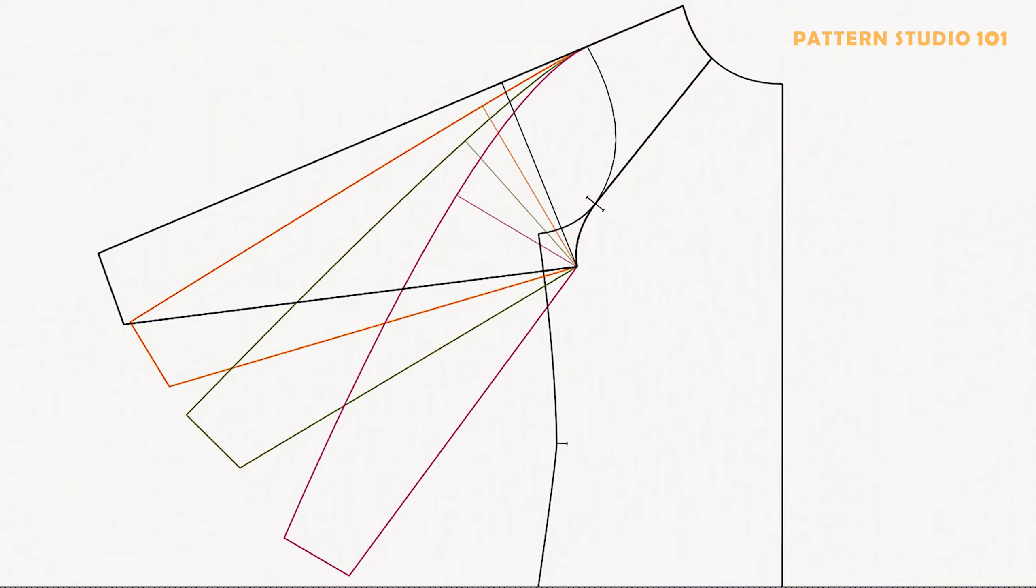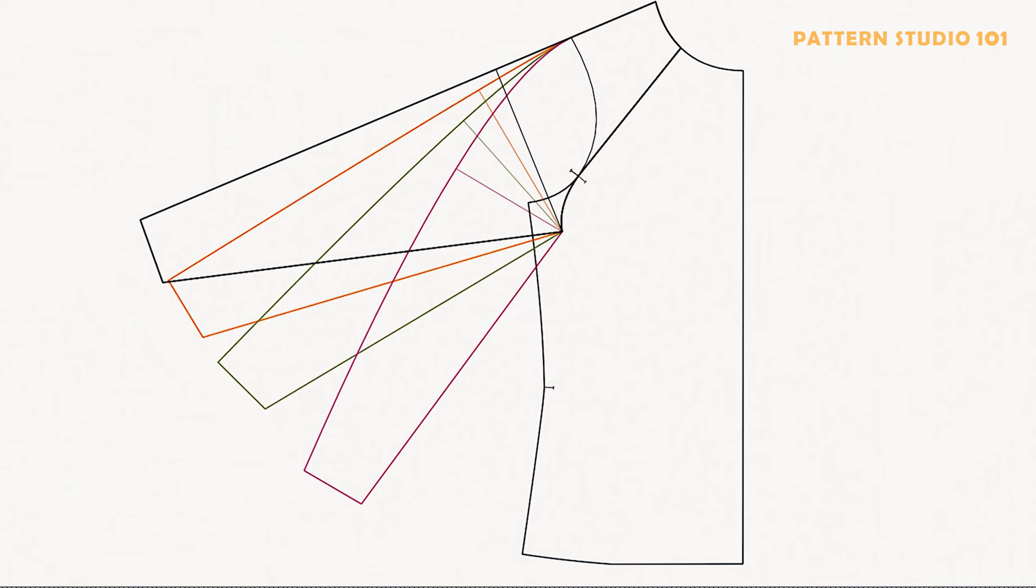Let's say you make coats or jackets with the pink pattern we just drafted. Of course, you can make it more angled than the pink one if you want. But what if you want to increase the bicep without changing the angle?